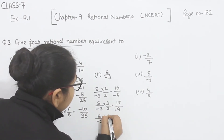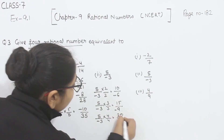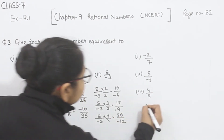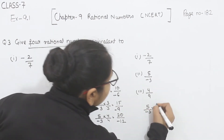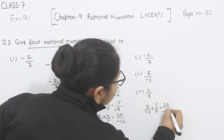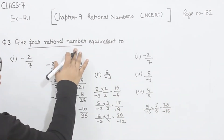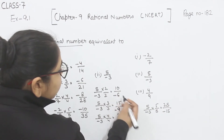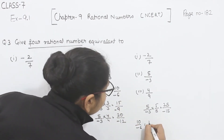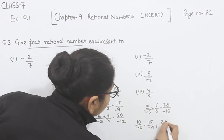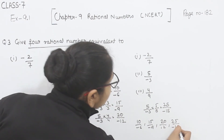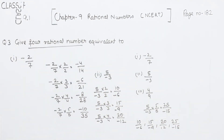For the next one, we multiply by 4: 5 fours are 20 and 4 threes are 12, giving 20 by minus 12. Now multiplying by 5: 5 fives are 25 and 5 threes are 15, giving 25 by minus 15. So the 4 equivalent rational numbers are 10 by minus 6, 15 by minus 9, 20 by minus 12, and 25 by minus 15. This is part 2.